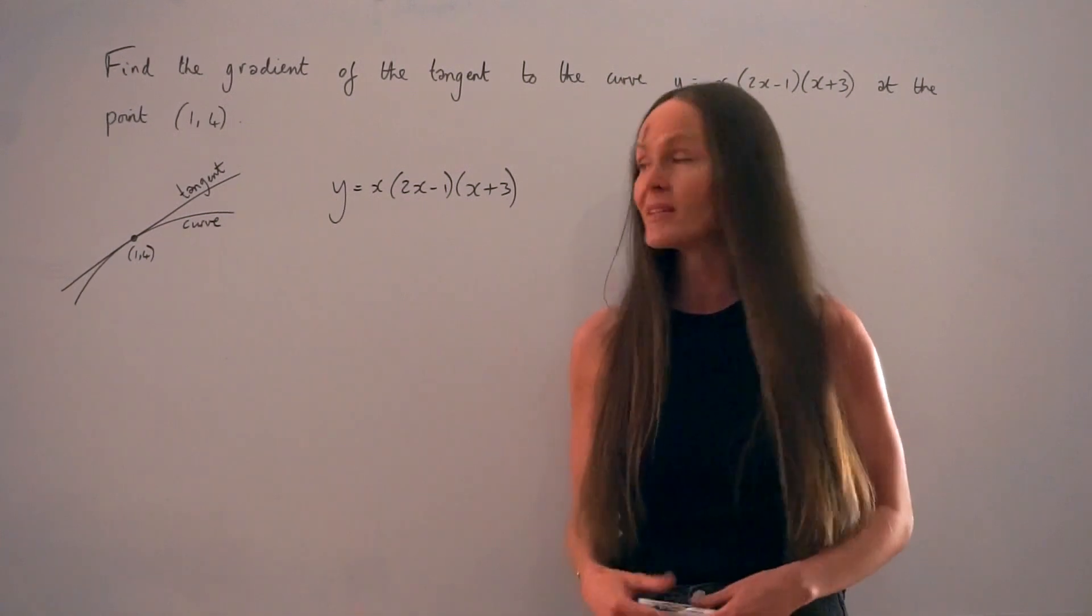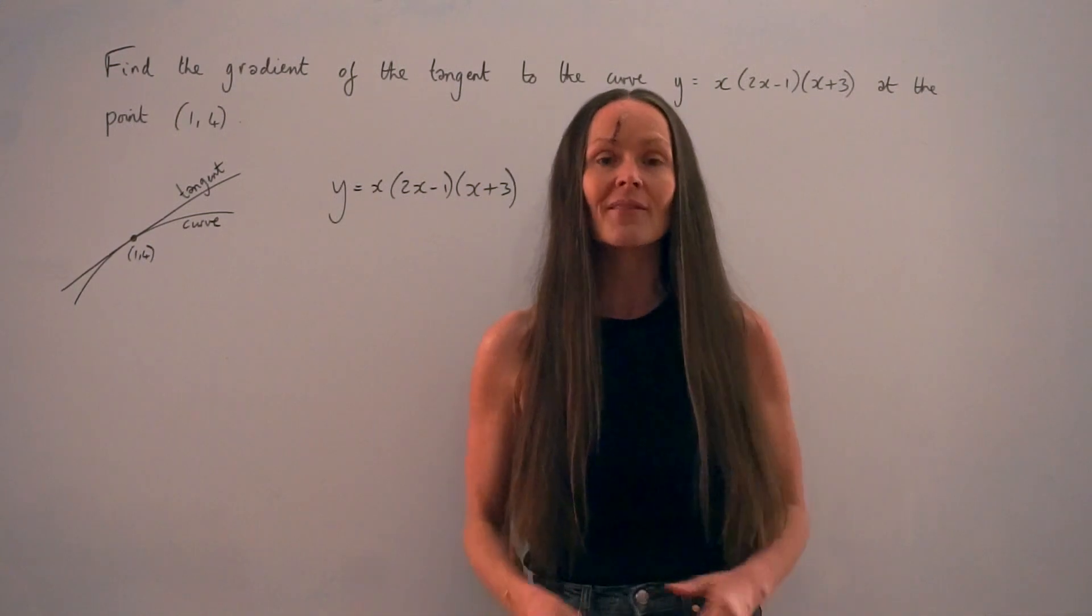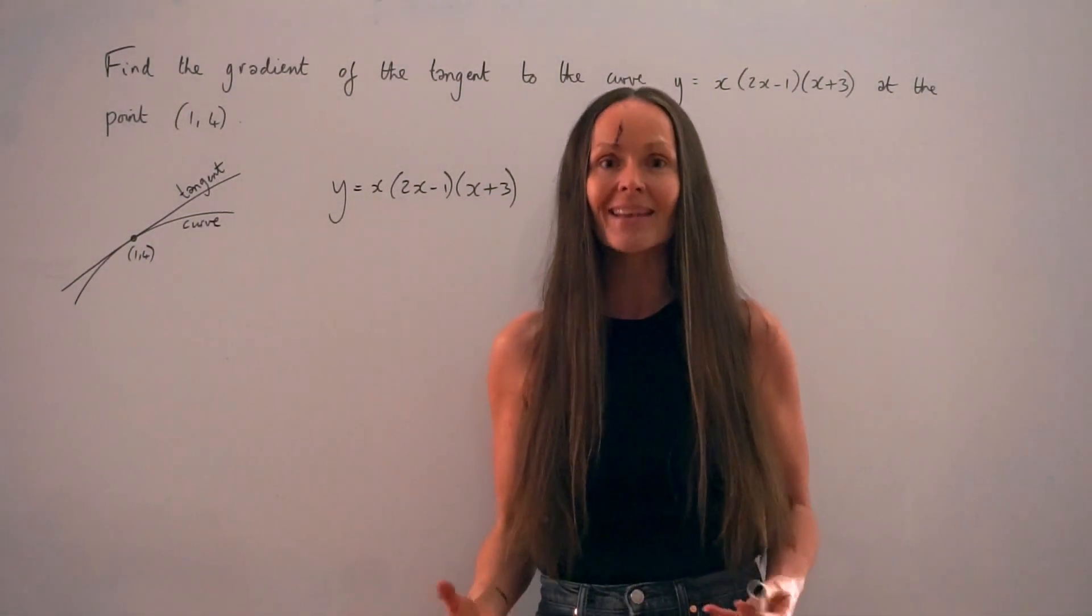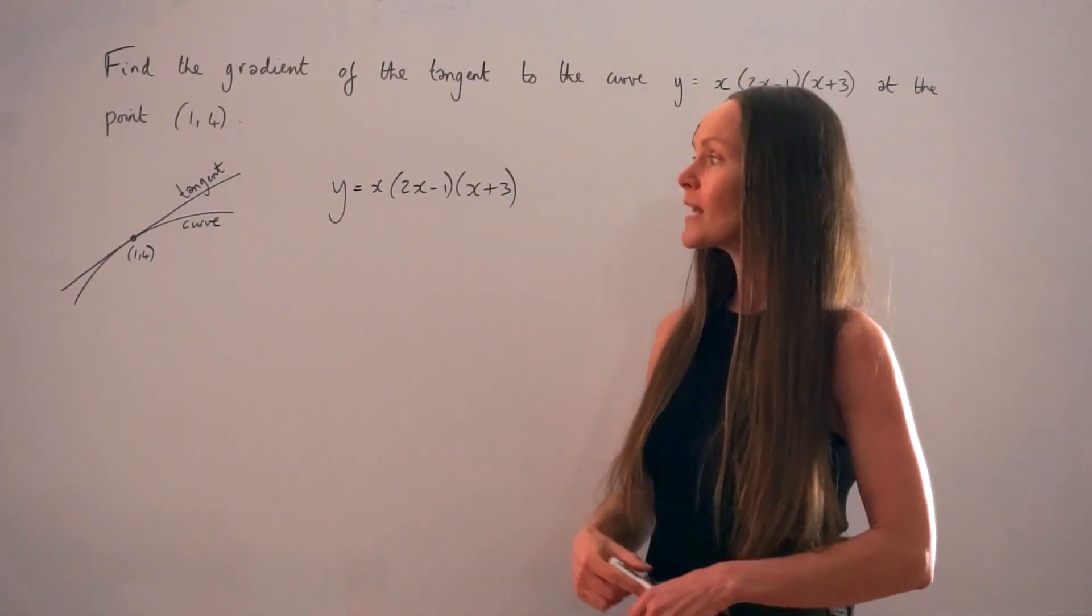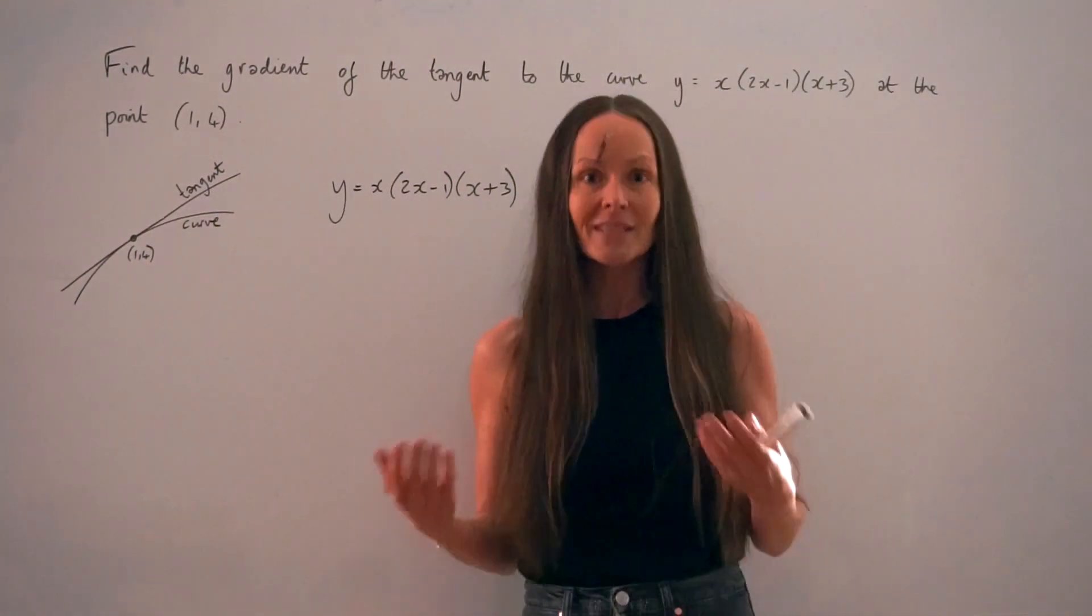Hopefully you can see from this sketch that at that point (1,4) the tangent and the curve have exactly the same gradient, they have the same slope. So if we can work out the gradient of the curve at this point, we're also working out the gradient of the tangent.